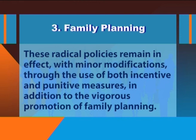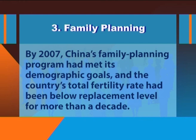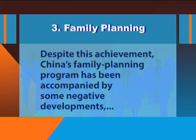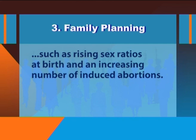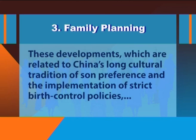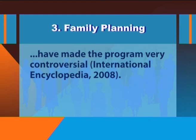These radical policies remained in effect with minor modifications through the use of both incentive and punitive measures, in addition to vigorous promotion of family planning. By 2007, China's family planning program had met its demographic goals, and the country's total fertility rate had been below replacement level for more than a decade. Despite this achievement, China's family planning program has been accompanied by some negative developments, such as rising sex ratios at birth and an increasing number of induced abortions. These developments, related to China's long cultural tradition of son preference and the implementation of strict birth control policies, have made the program very controversial.